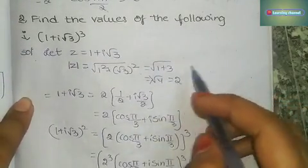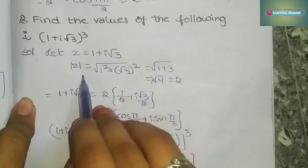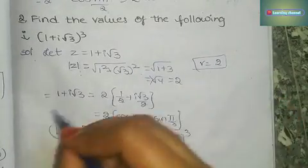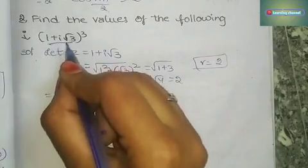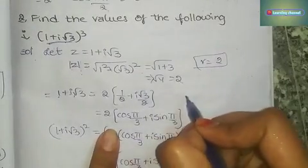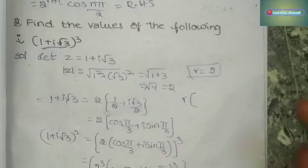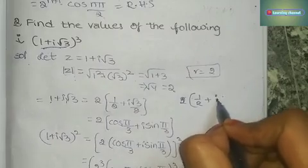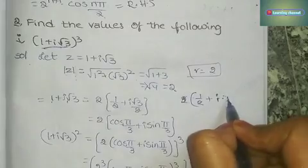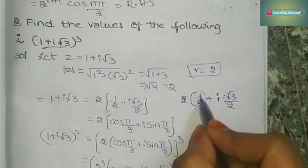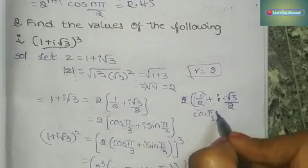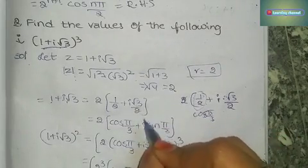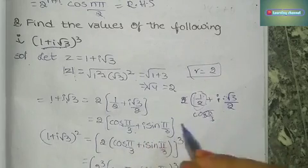In the second Roman first problem, find mod z: r = 2. For 1 + i√3, divide and multiply by 2. We get 1/2 = cos(π/3) (which is cos 60°) and √3/2 = sin 60° = sin(π/3). So 1 + i√3 = 2(cos(π/3) + i sin(π/3)).